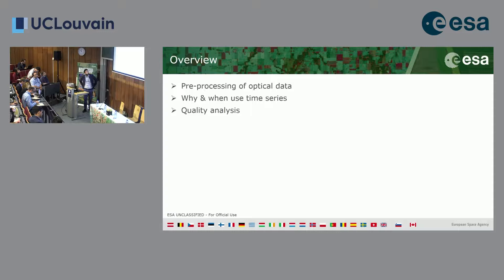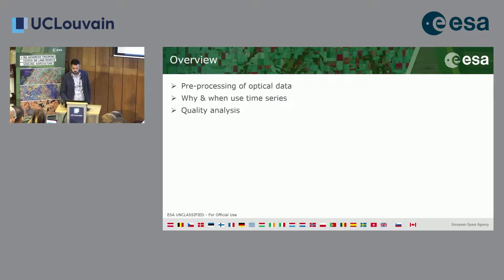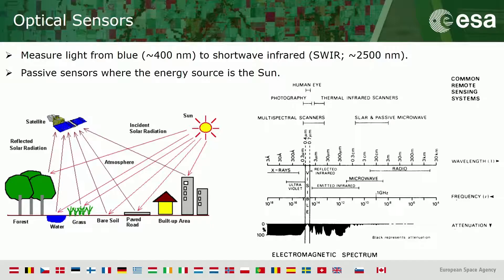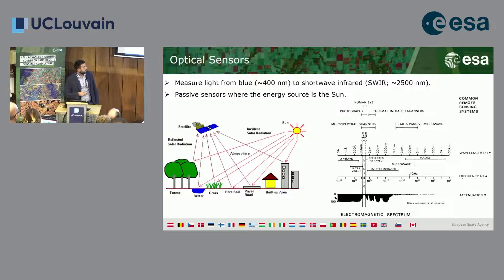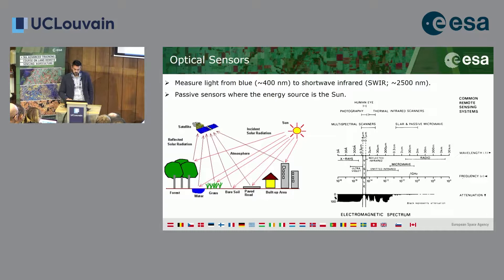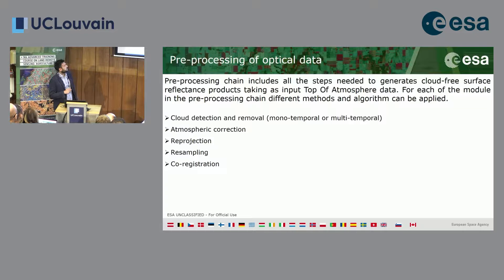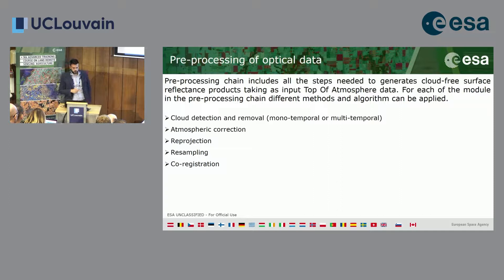Optical sensors are passive sensors where the energy source is the Sun. They measure light from blue to SWIR bands. The atmosphere represents the effect that mostly affects the measurement. So, as pre-processing, we need to process images coming from top of atmosphere in order to correct for the atmospheric effect, and to produce cloud-free surface reflectance products we need to detect and remove clouds.